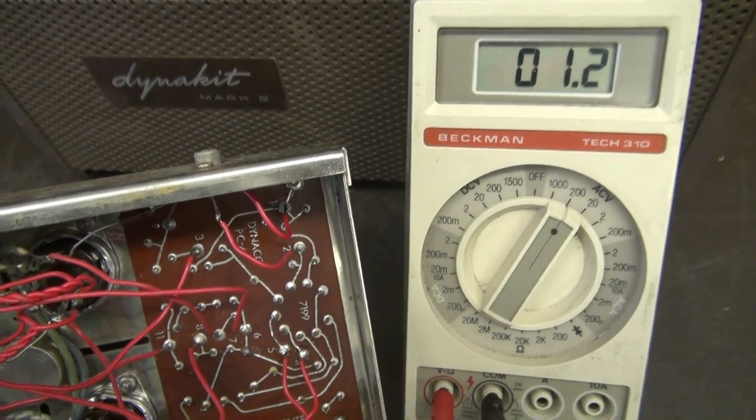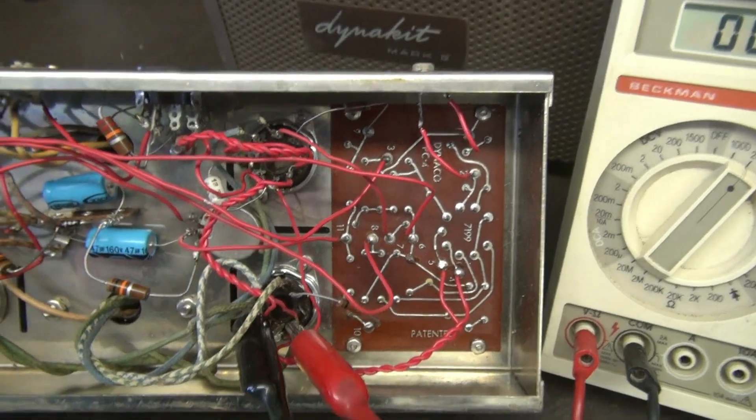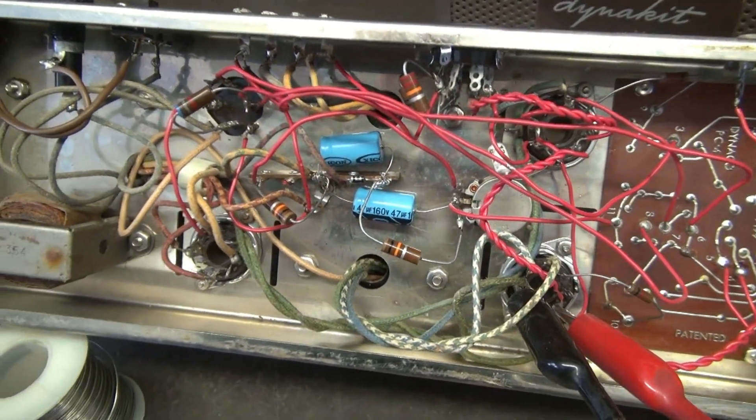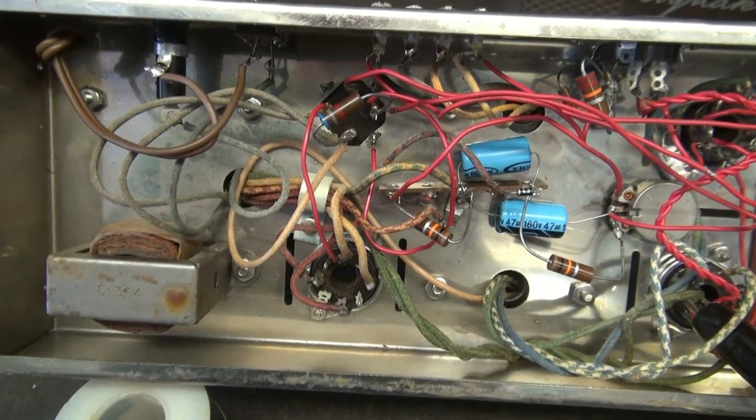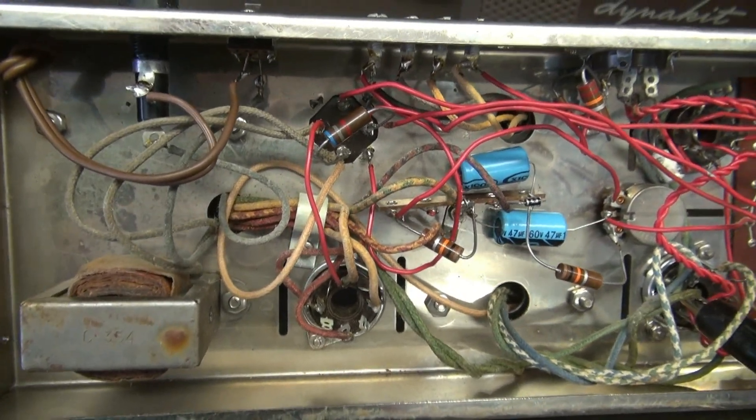So I'm on the filament line going to the first EL34. Same deal. Bring up the Variac. Yep. She's alive. So I can assume the power transformer is okay. I do not see any current reading on the Variac, which means there's probably no leakage to ground on that transformer.